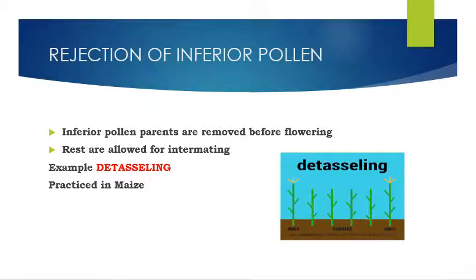Rejection of inferior pollen: the inferior pollen parents are removed before flowering and the rest are allowed for intermating. By this, the defect of no control on pollination can be prevented. For example, detasseling, which is practiced in maize.